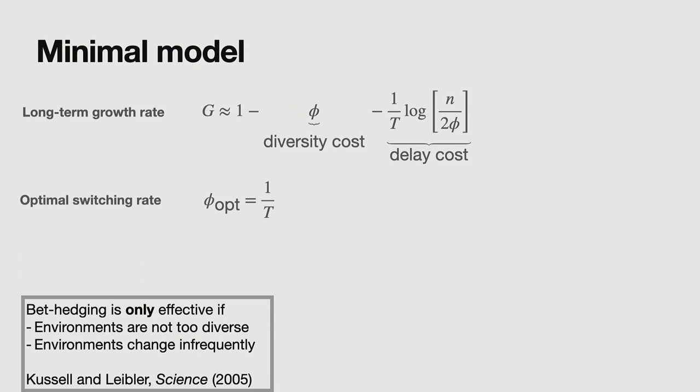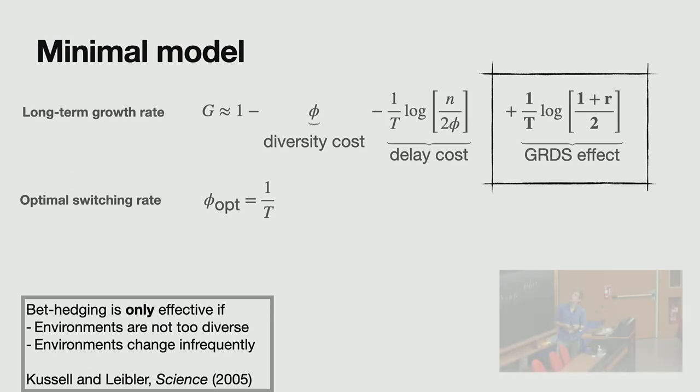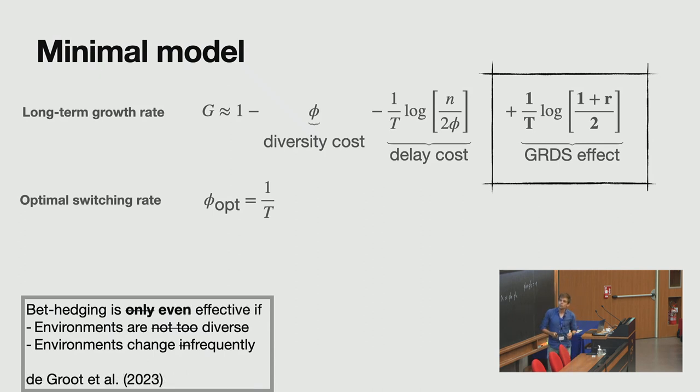Looking at, well, we try to, of course, do the analytical derivation, and it's quite elegant. We just get the same expression as Kussmann-Leibler got, including an extra term. That gives me the strength of the growth rate dependent stability effect. And this effect can make this statement that we found from the Kussmann-Leibler paper change. From bet hedging is only effective in such and such case, to it can even be effective if environments are diverse and environments change frequently. And it just depends on how strong your growth rate dependent stability is. So I think this is a really strong effect.